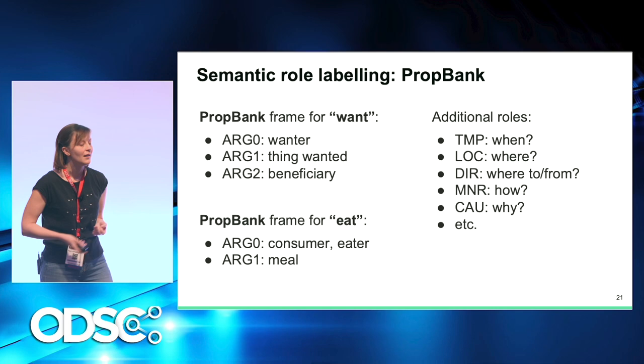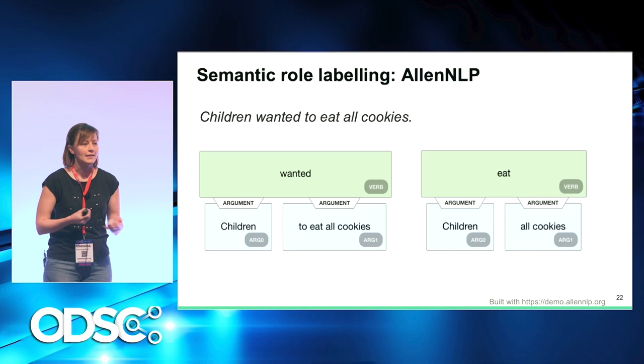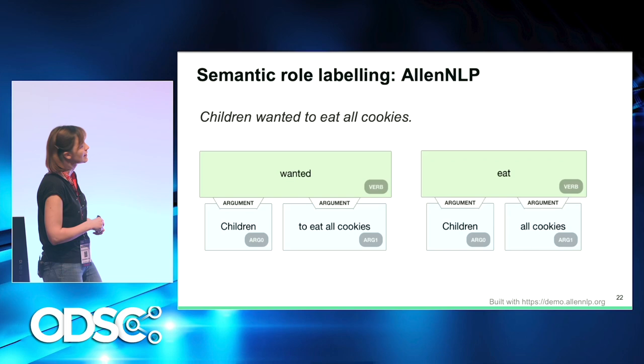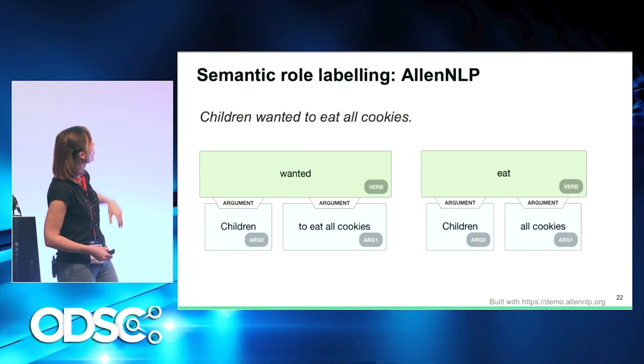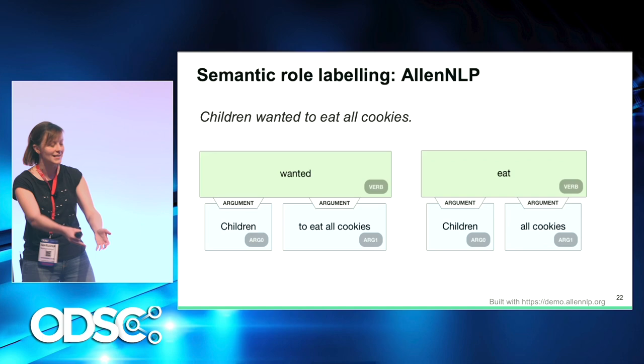You can find tools and demos of NLP tools that do semantic role labeling online. For example, AllenNLP is a quite recent NLP toolkit that has a demo for semantic role labeling. For our example text, it finds two events — 'wanted' and 'to eat' — the doer of each event is 'children,' and the object of what is wanted and what is eaten is shown in the output. The doer is argument zero and the object is argument one.